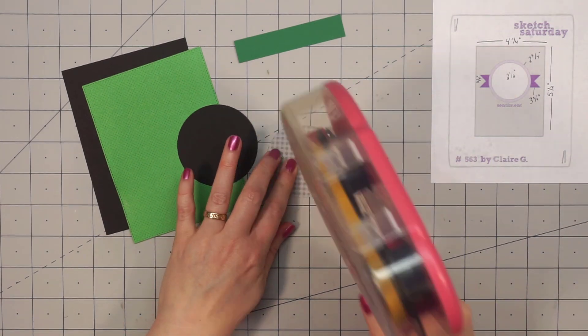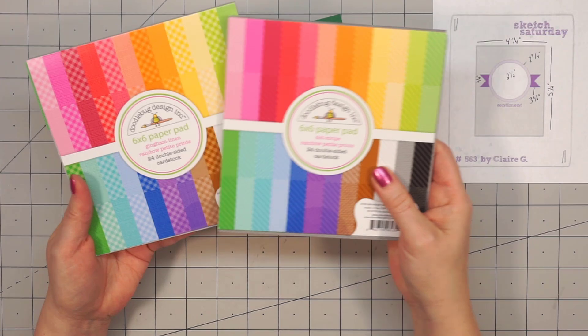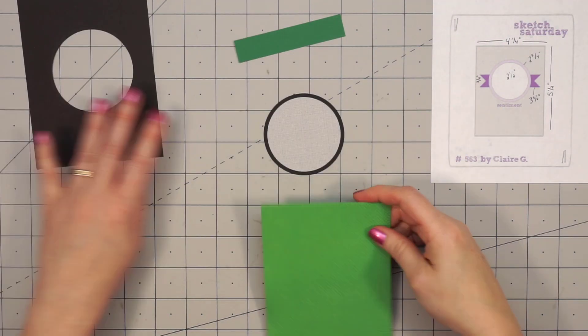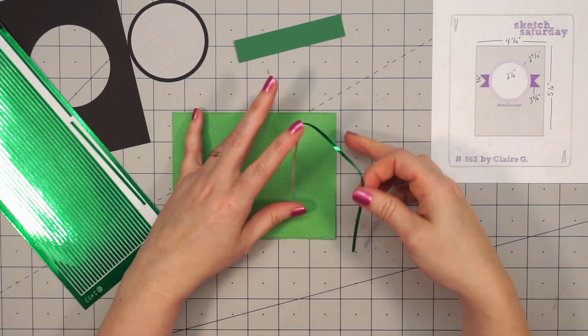Keeping with tradition, I have a new Glaucoma Awareness card to share today. I'm using two different paper collections, both by Doodlebug Design. This is some of their petite prints. The sketch I'm using is by Sketch Saturday, number 563.